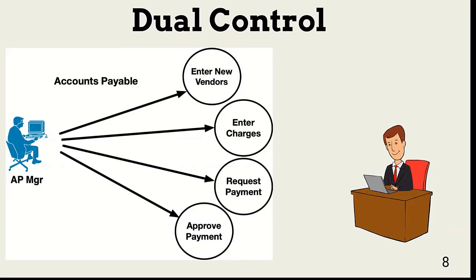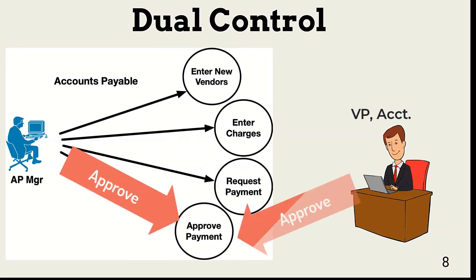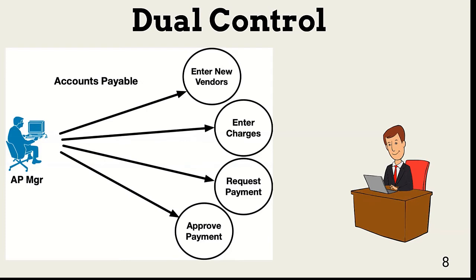With dual control, it takes two people to perform a required task. In this example, the AP manager and the VP of accounting have to approve a payment. Notice that this is different than separation of duties, which requires more than one person to perform all the tasks. Dual control requires that a single task requires at least two people to perform it.